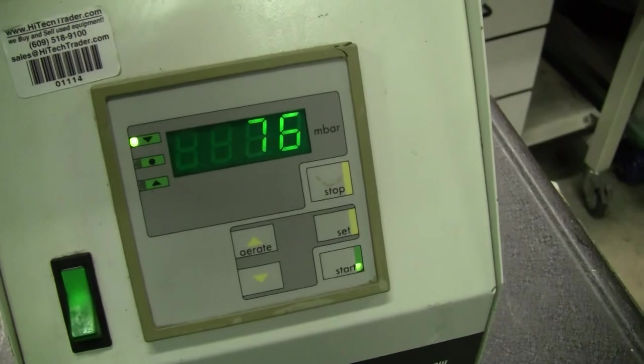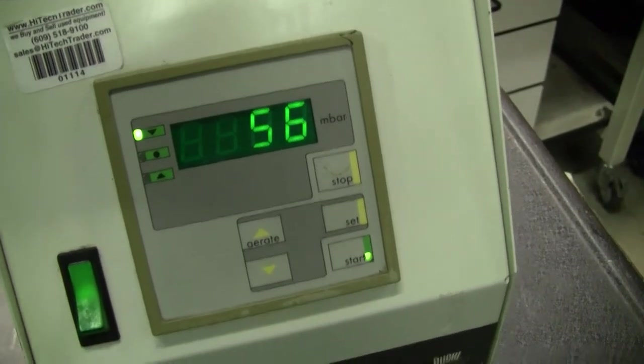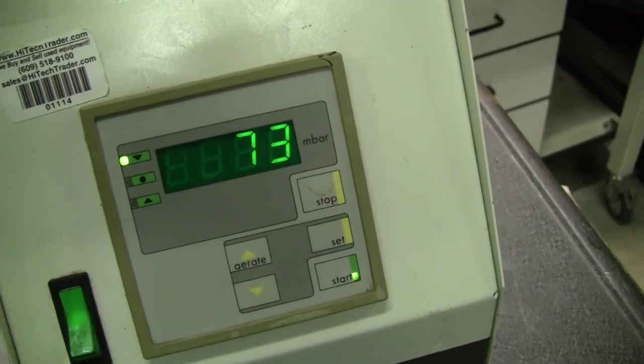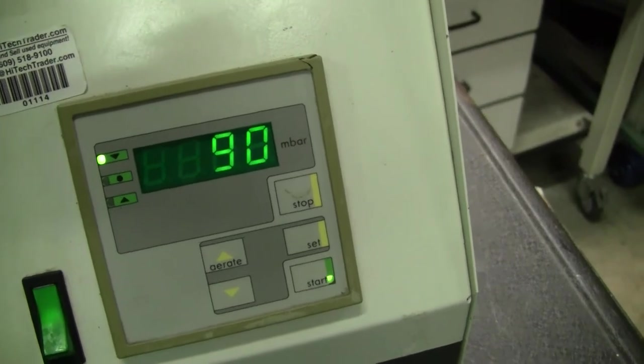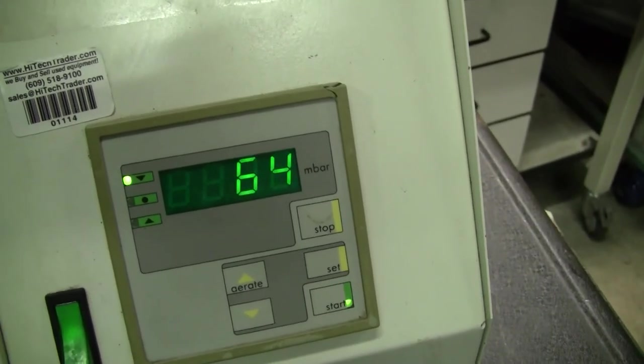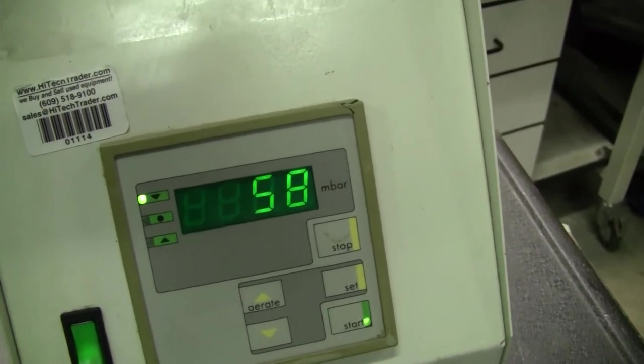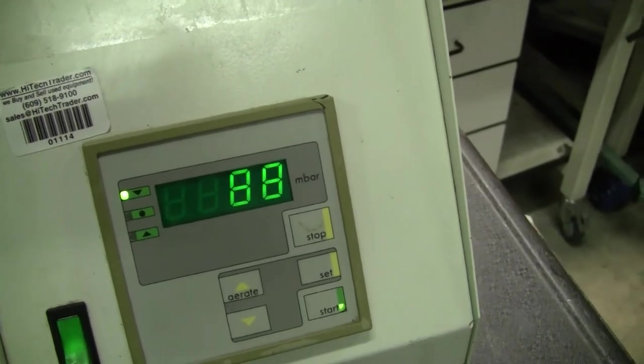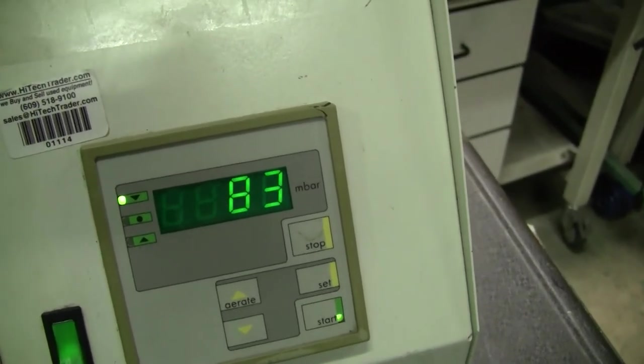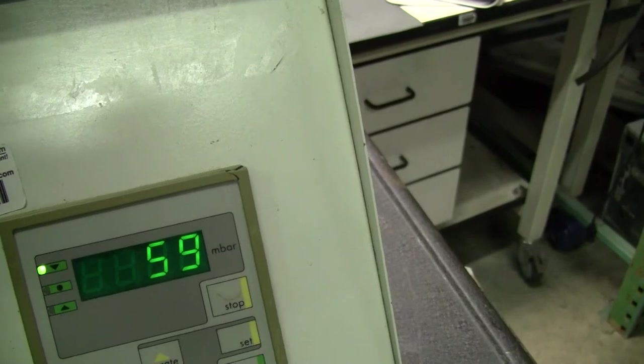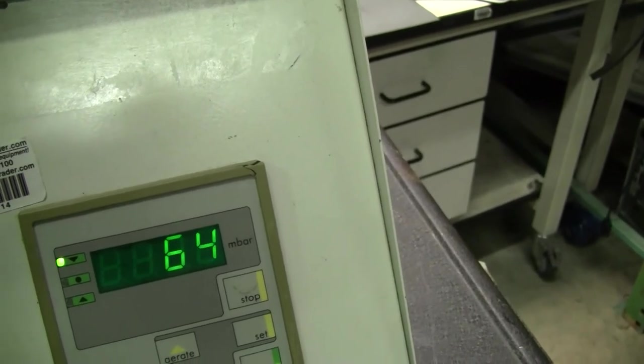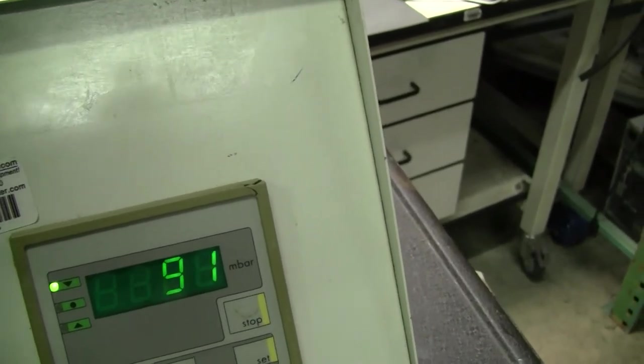There are different settings on the front. You can get it to hold a vacuum. It'll actually purge and it'll click on and off to try to maintain a constant vacuum. You can set that point wherever you want. The max vacuum that we're getting is about 56 millibar. It'll hold steady about 70.